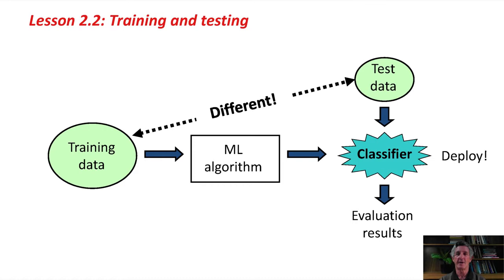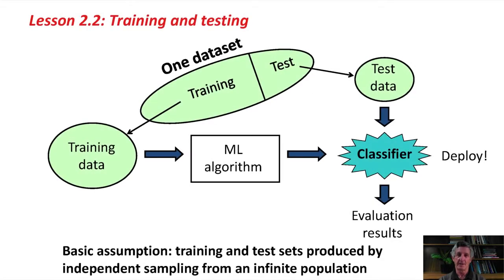What if you've only got one dataset? If you've just got one dataset, you should divide it into two parts. Maybe use some of it for training and some of it for testing. Perhaps two-thirds of it for training and one-third of it for testing. It's really important that the training data is different from the test data. Both training and test sets are produced by independent sampling from an infinite population. That's the basic scenario here, but they're different, independent samples. It's not the same data.